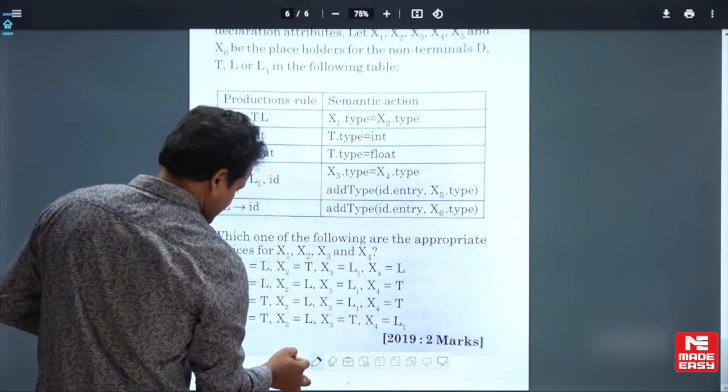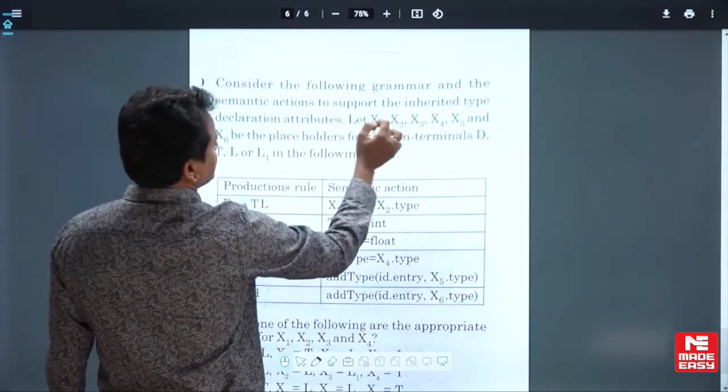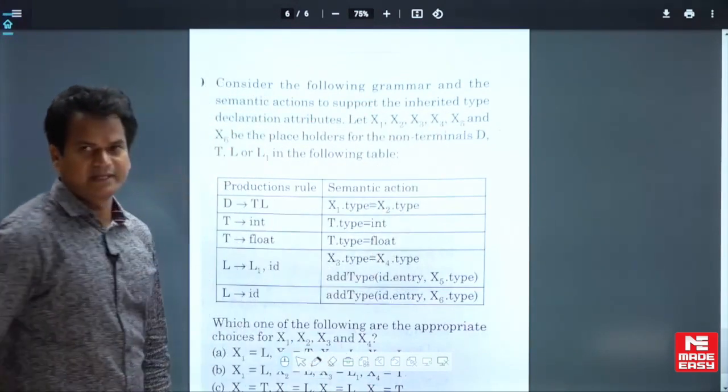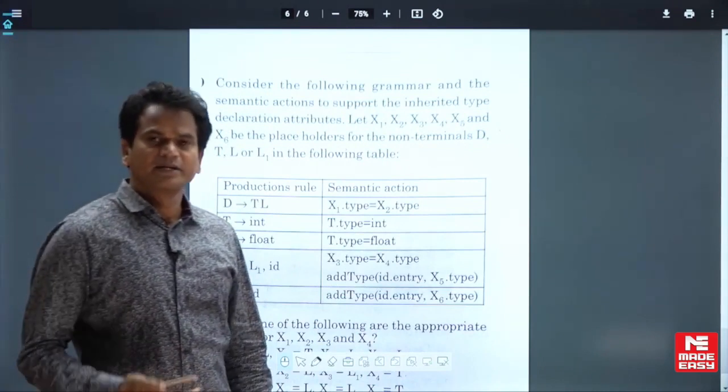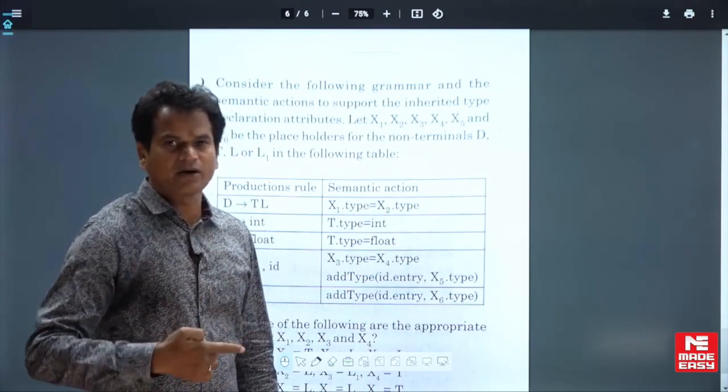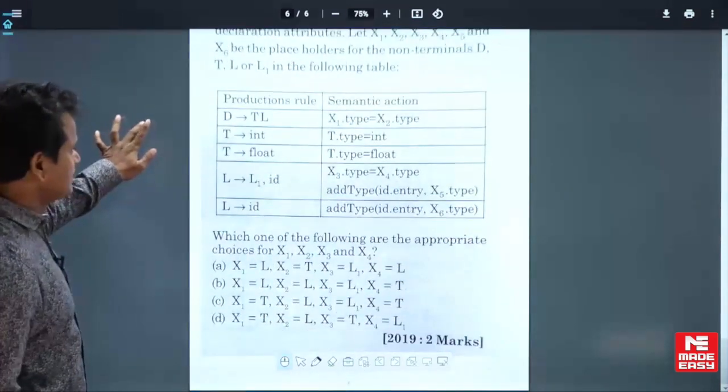The question is: the following grammar semantic actions support the inherited type. Inherited means we can find the child value from either parent or from the siblings. Now look at this one.